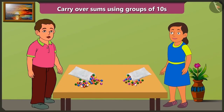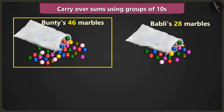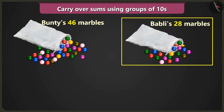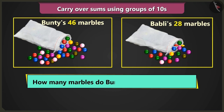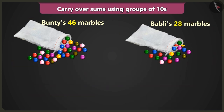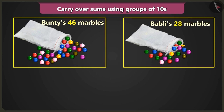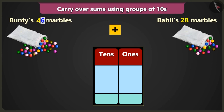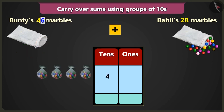Now after winning more marbles, I have a total of 46 marbles and I have 28 marbles. So how many marbles do we have together right now? Come on, let us add 46 and 28. I have 4 tens and 6 ones — 46 marbles. So we will write 4 in the box of tens and 6 in the box of ones.